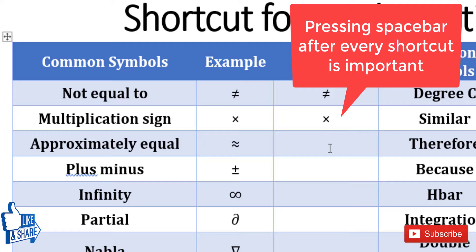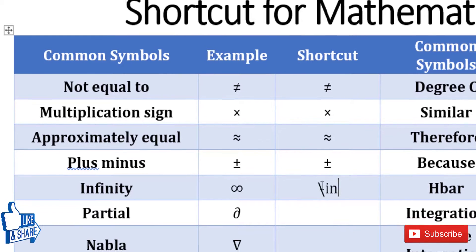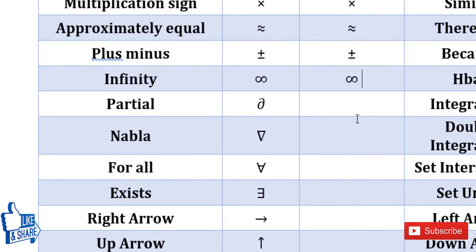So that the shortcut text will get converted into a proper symbol. Shortcut for the approximate sign is backslash approx and then space. Plus-minus is backslash pm space, and then infinity is backslash infty and then space. At the end of the video, I will show you the complete list of shortcuts which you can browse whenever you're in need.